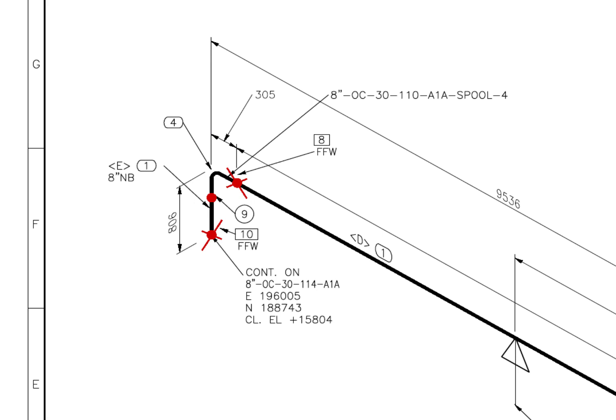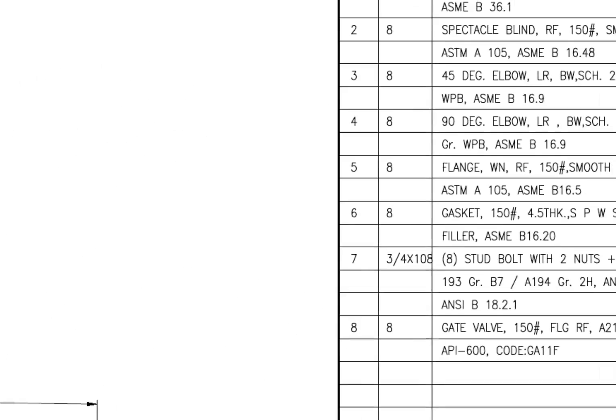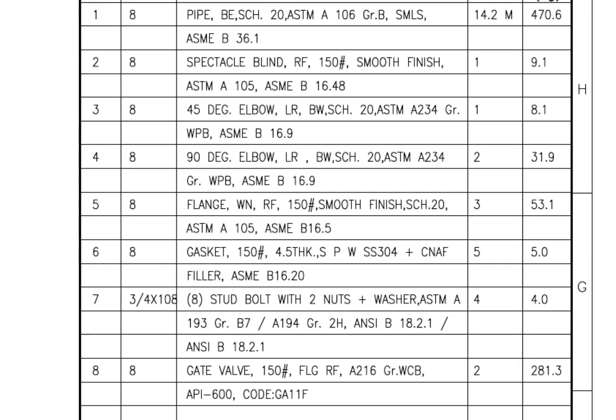Both are the same item. Let us check the material list. 90 degree elbow, long radius, butt weld, schedule 20 and the size is 8 inch.